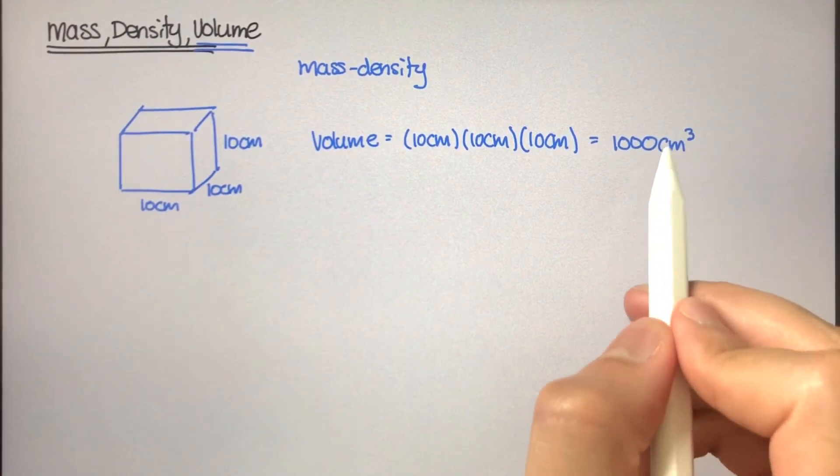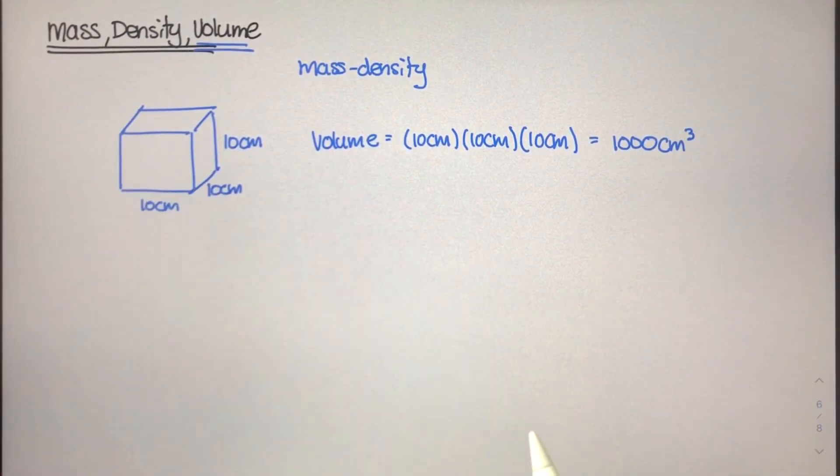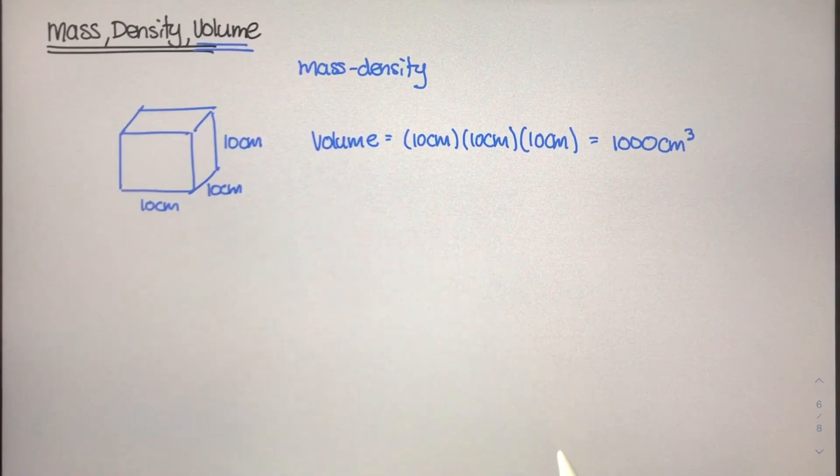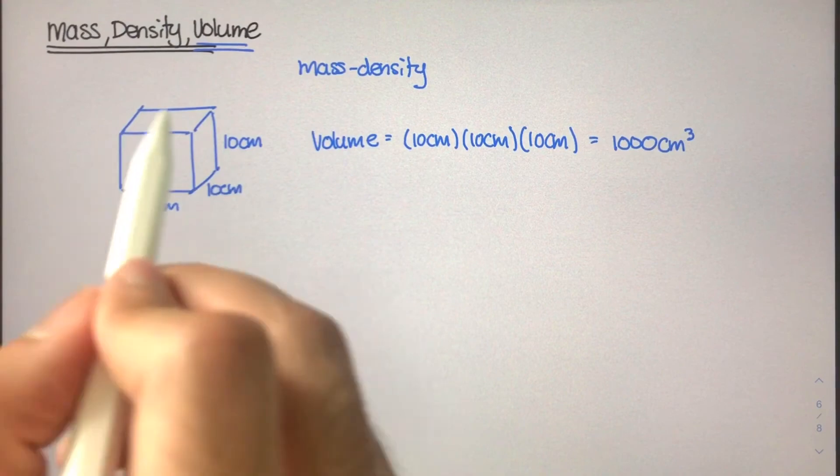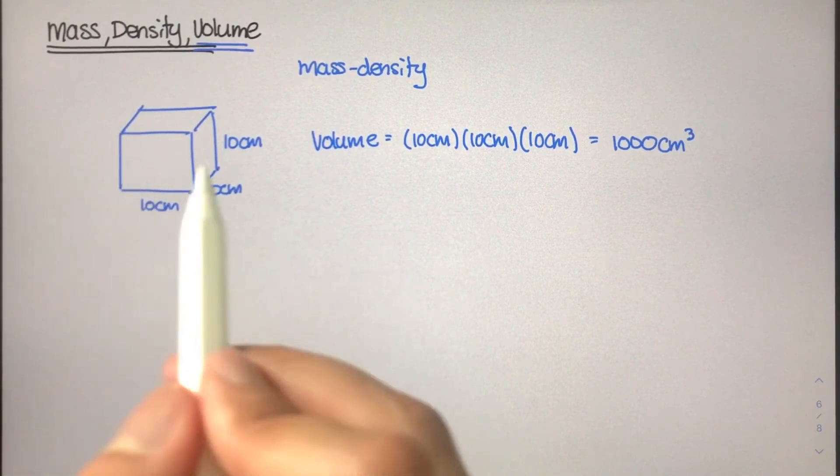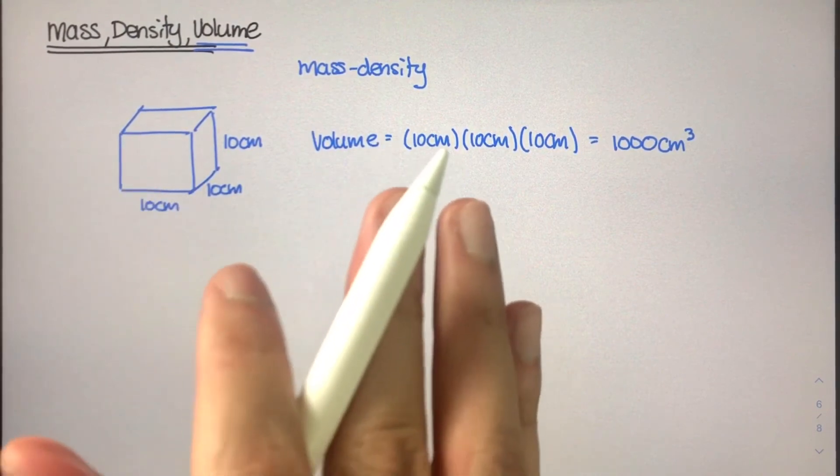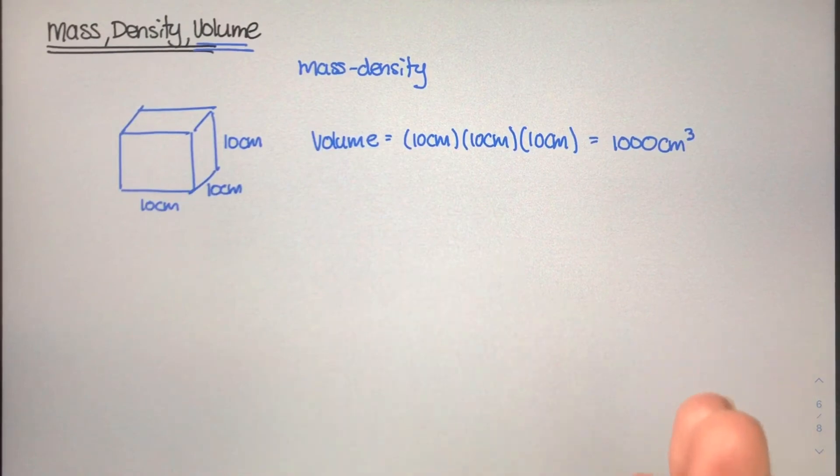Now, why is volume important? Why is calculating the volume of this space important? Well, volume tells us how much space a system or a substance takes up, but it tells us very little about what that substance actually is.